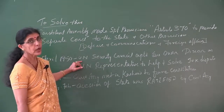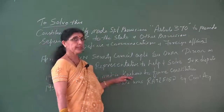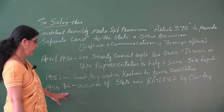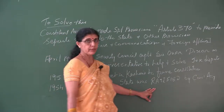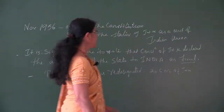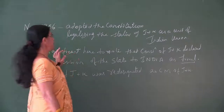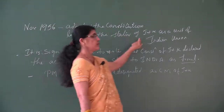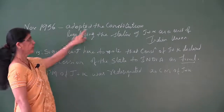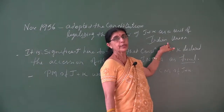In 1951, another attempt was made by the Constituent Assembly — all members met in Kashmir to frame a new constitution. In February 1954, the accession of the state was ratified and agreed upon by the Constituent Assembly. After the ratification in 1954, in November 1956, the constitution was adopted, legalizing the status of Jammu and Kashmir as a unit of the Indian Union. From 1956 onwards, J&K had a constitution giving it legal status within the Indian Union. The constitution of J&K declared the accession of the state to India as final — they had agreed to accede, and this was their final decision.